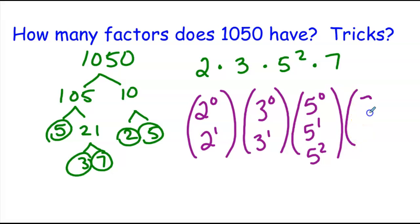For 7s, we could have no 7s or just 1 seven here. So if you notice, we have 2 different ways to pick from the 2s, 2 different ways to pick from the 3s, 3 different ways to pick from the 5s, and 2 different ways to pick from the 7s.